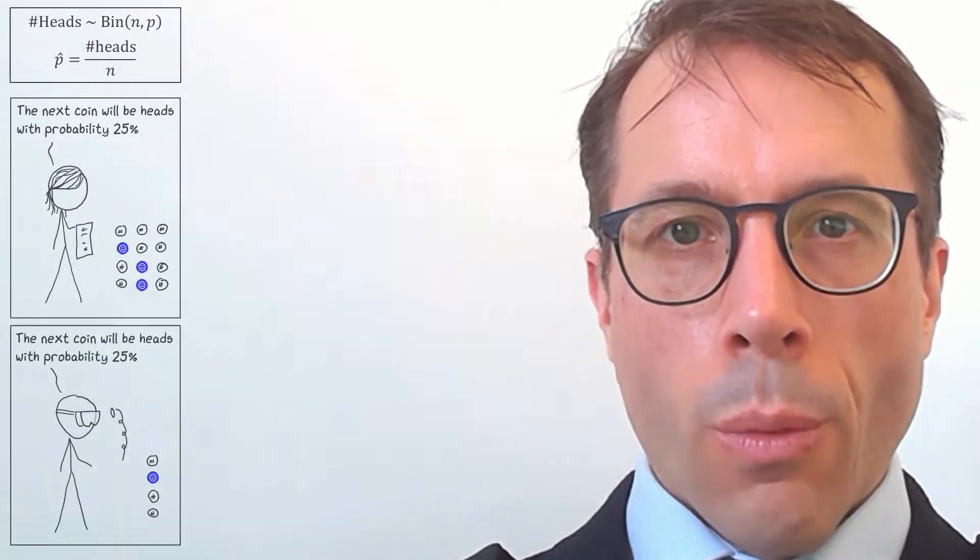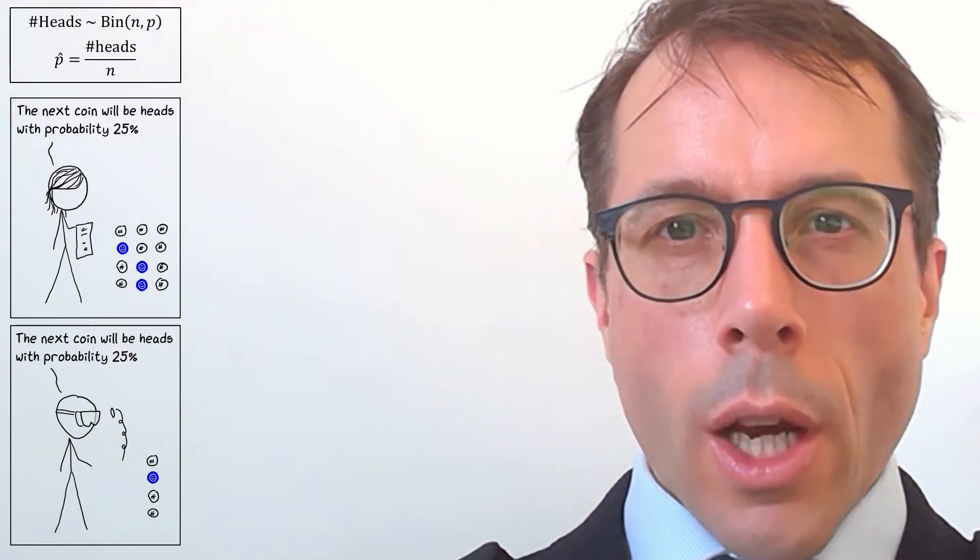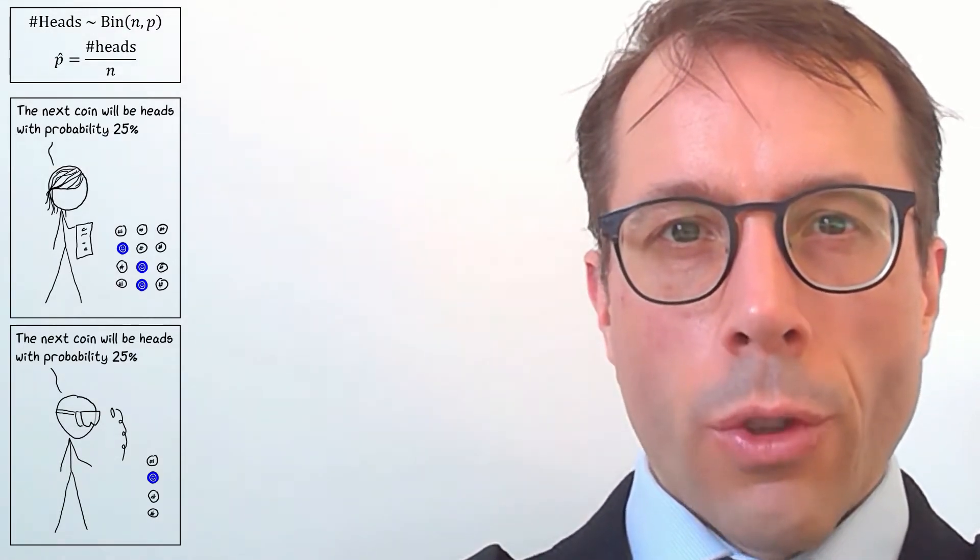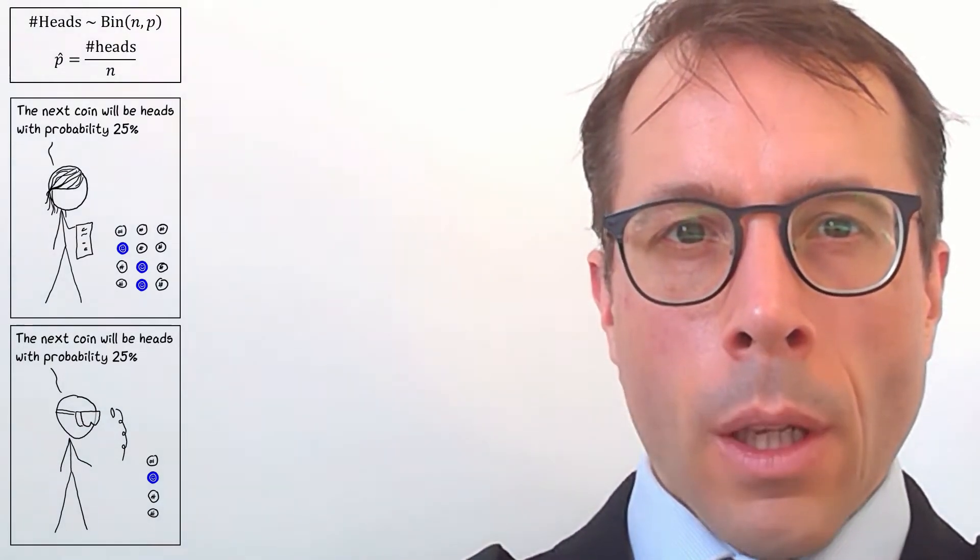Here's a probability conundrum that we looked at in an earlier video, a conundrum that gets to the heart of what's tricky about inference. Let's suppose we have a coin, possibly biased.